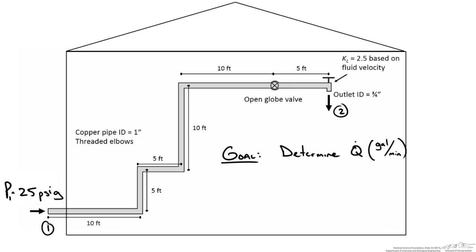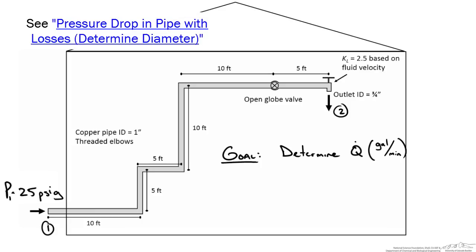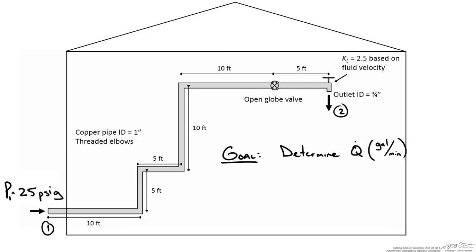In this screencast we are going to work through a pipe flow example where, similar to another screencast, we had to calculate the diameter of the pipe given certain flow characteristics. Here we have to calculate the flow rate Q for our piping network. Let's take a look at this schematic so we can figure out what is going on.